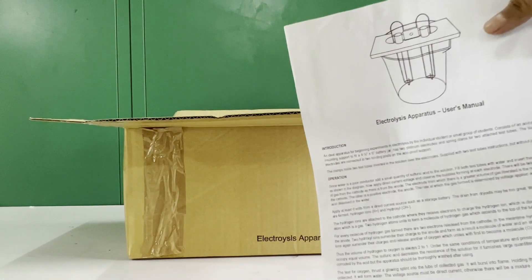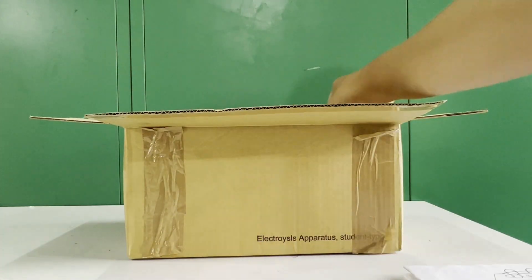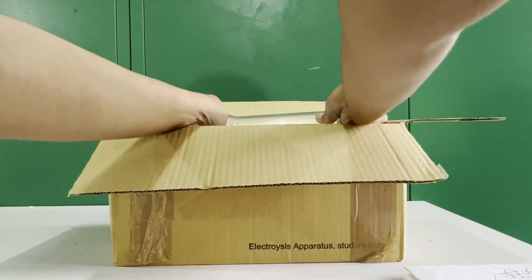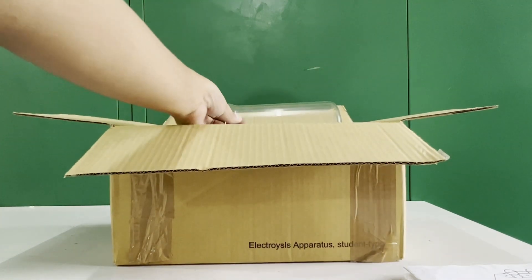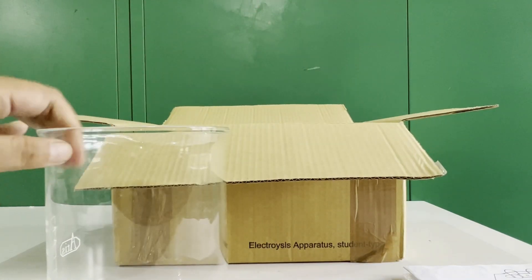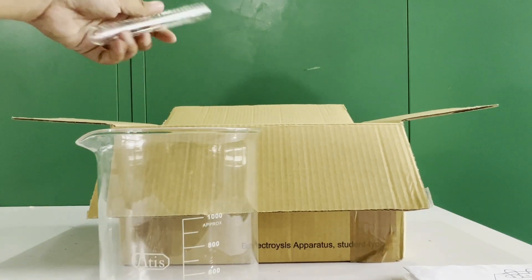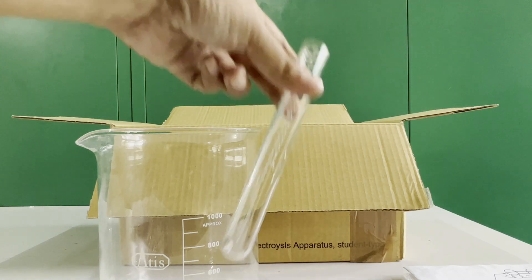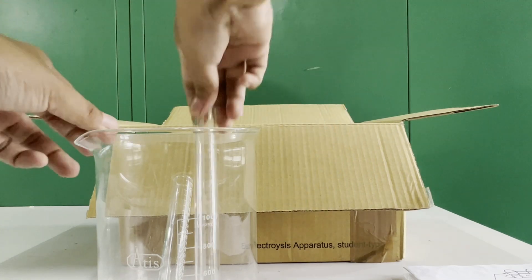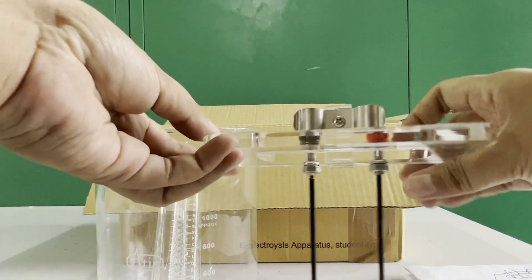To perform our electrolysis experiment, I will be using the electrolysis apparatus provided to us by DEPED. It includes a large beaker, two test tubes, and a glass portion containing the electrodes.